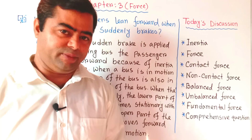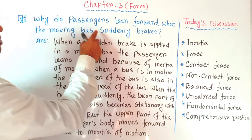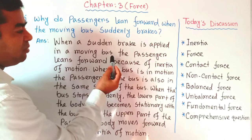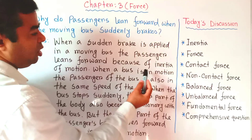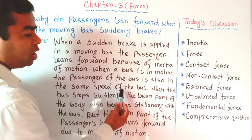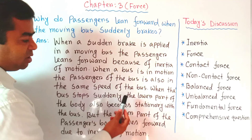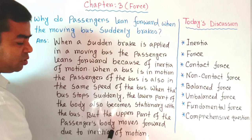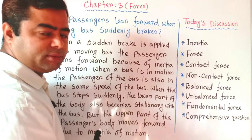Now we discuss three comprehensive questions. Question one: why do passengers lean forward when a moving bus suddenly brakes? When a sudden brake is applied, passengers lean forward because of inertia of motion. When the bus is in motion, the passengers are also moving at the same speed. When the bus stops suddenly, the lower part of the body becomes stationary with the bus, but the upper part of the passenger's body moves forward due to inertia of motion.